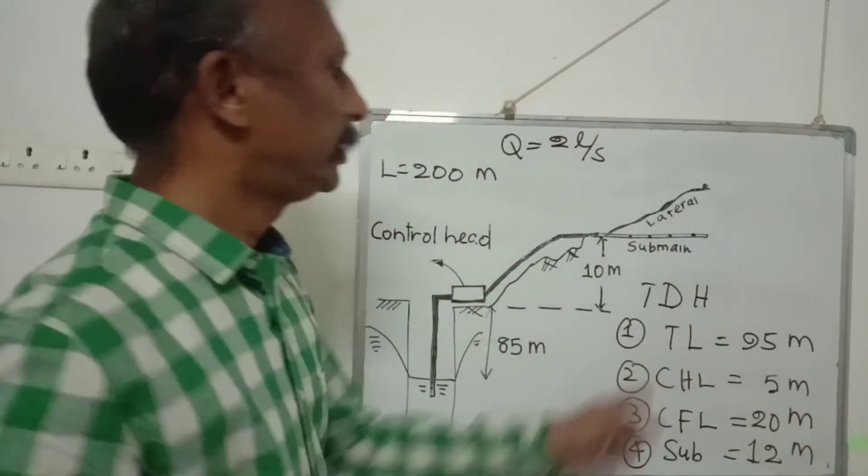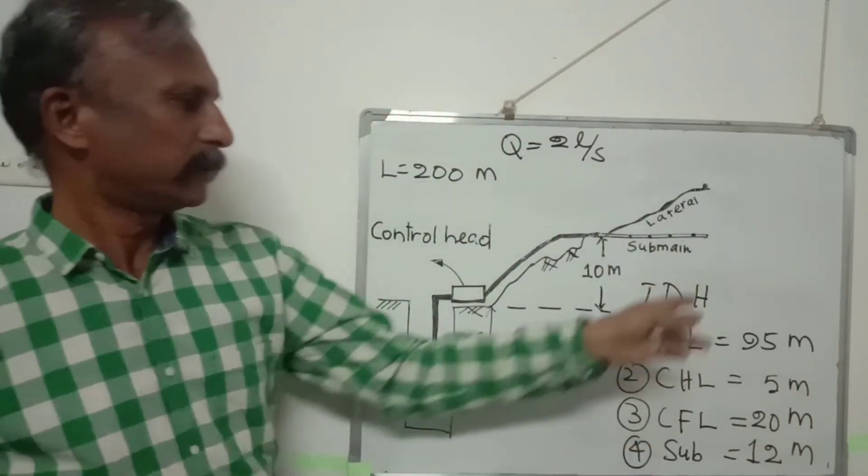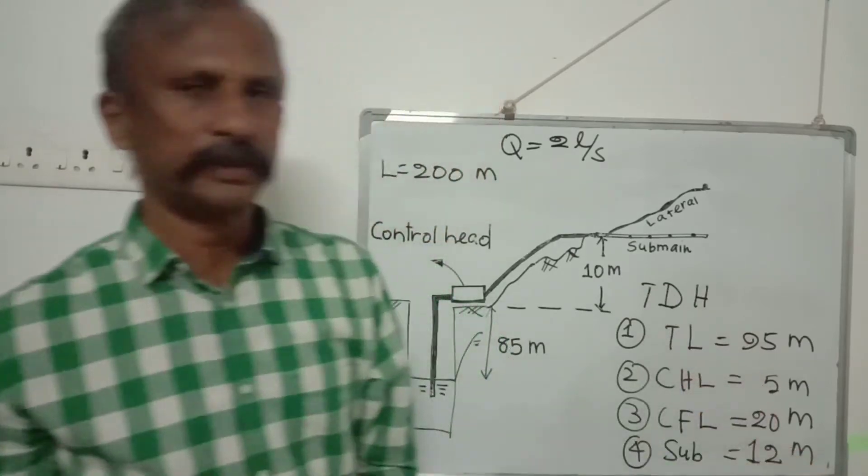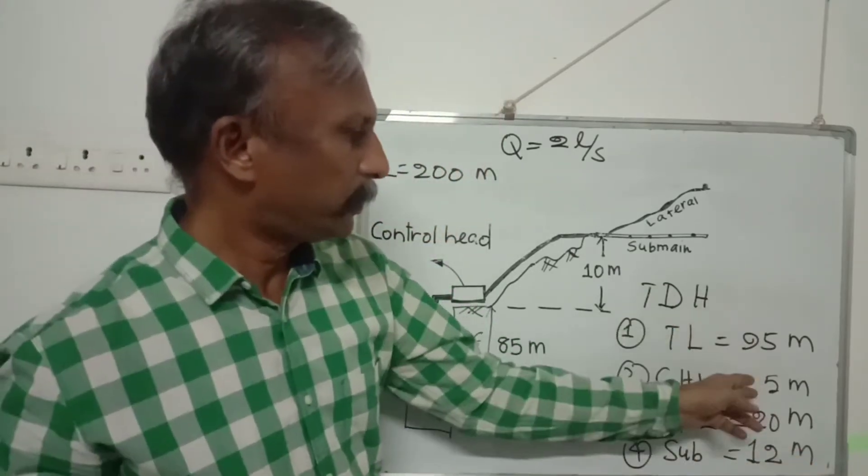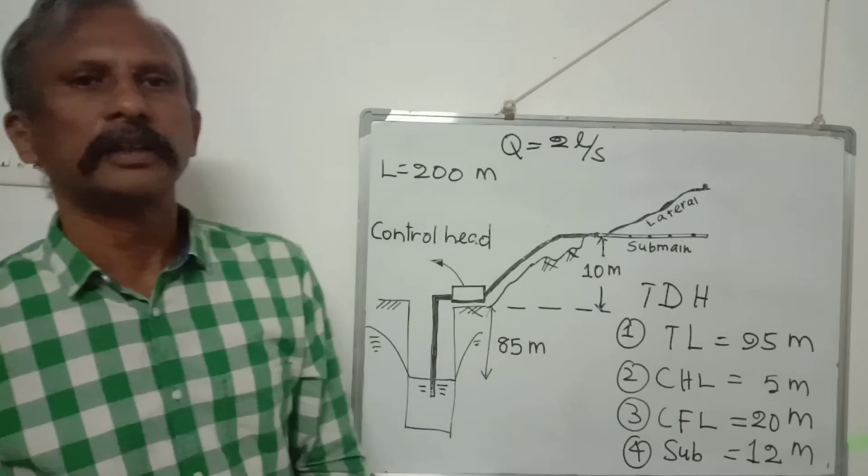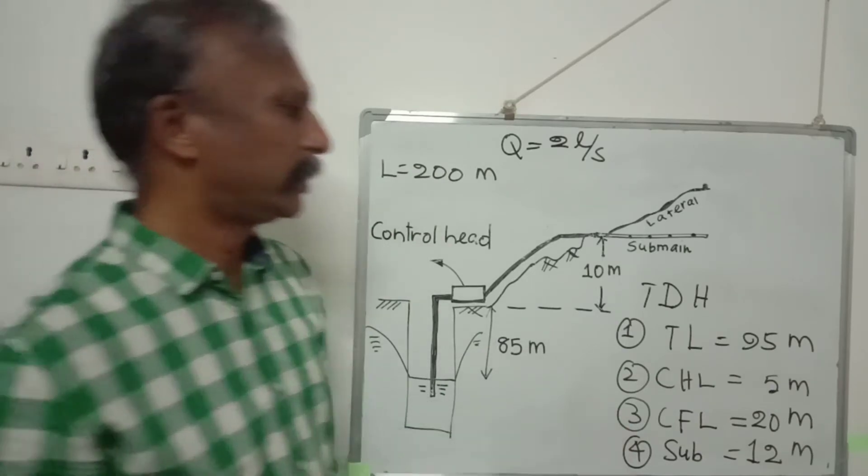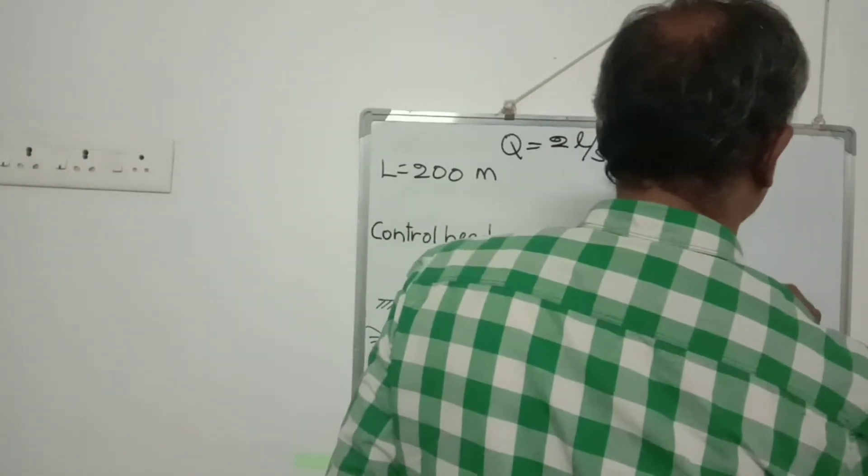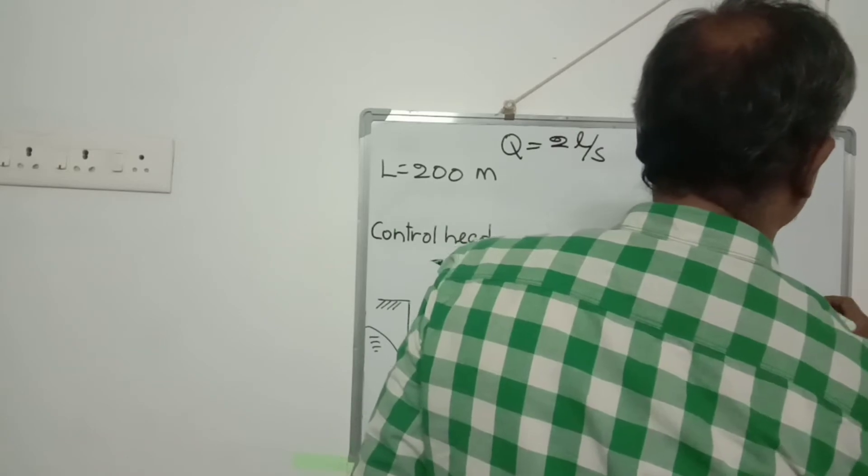The total dynamic head consists of all these four components. So if you add up all these components, you get total dynamic head to be equal to 132 meters.